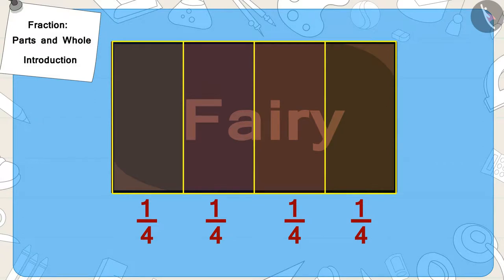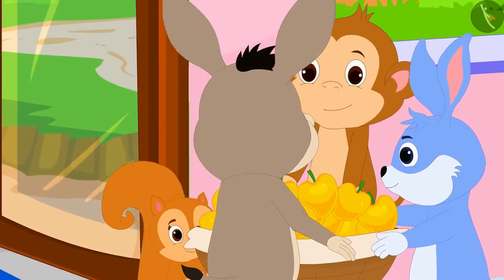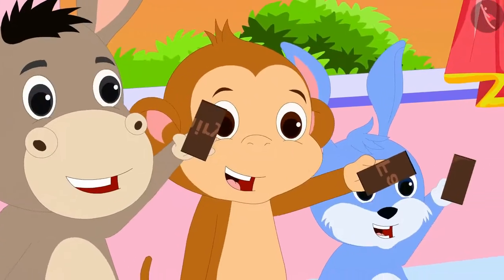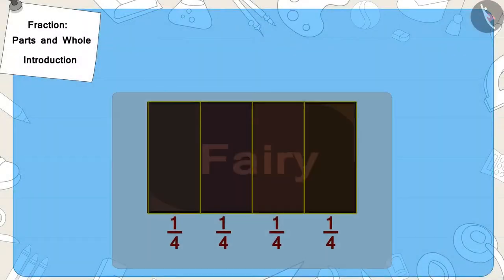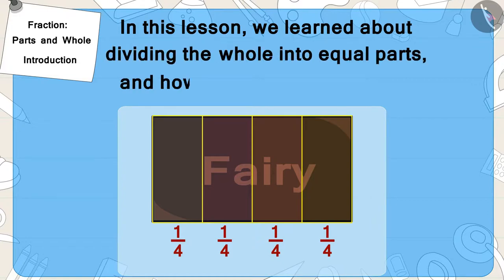We also call one by four as one fourth. Finally, the four of them reached Appu's house with the mango basket. Appu gave Bunny a chocolate, divided it into four equal parts as found in the answer by you, and gave each of them one part of it. Children, in this lesson we learned about dividing the whole into equal parts and how to write it as a fraction.